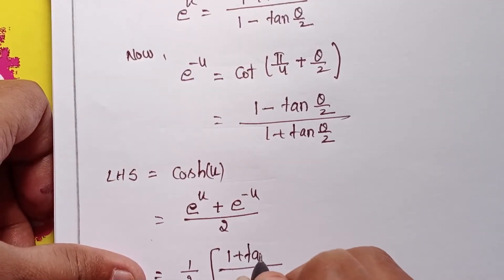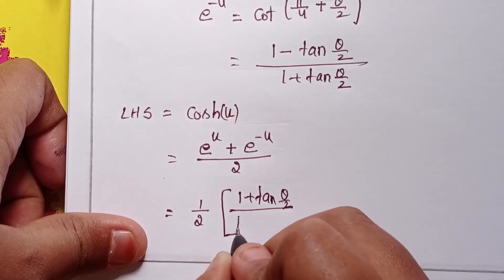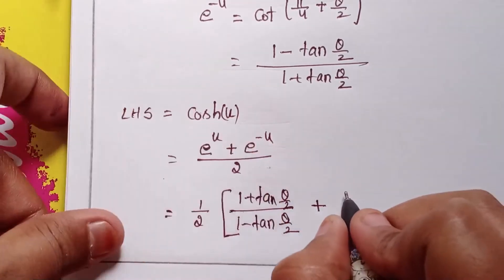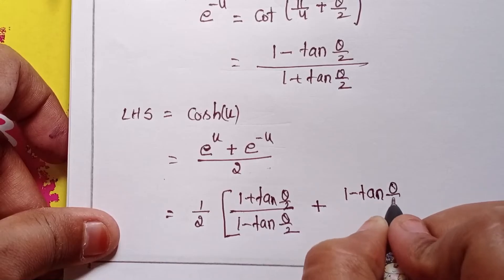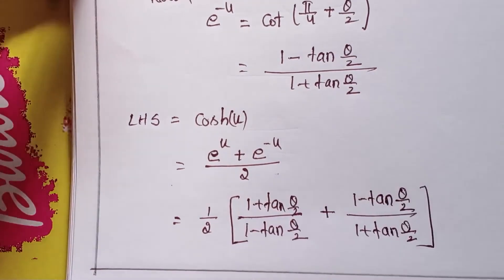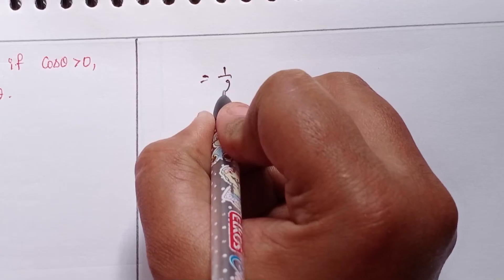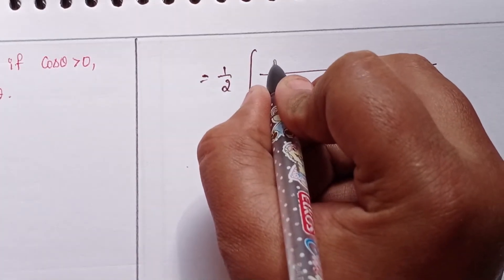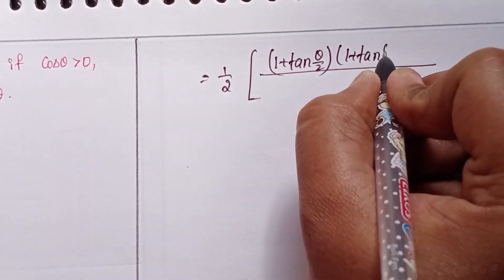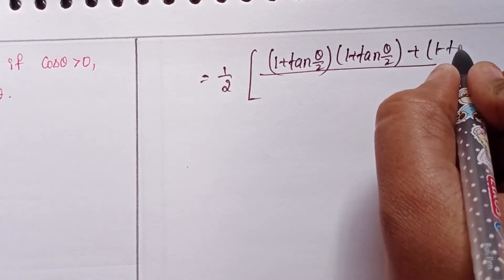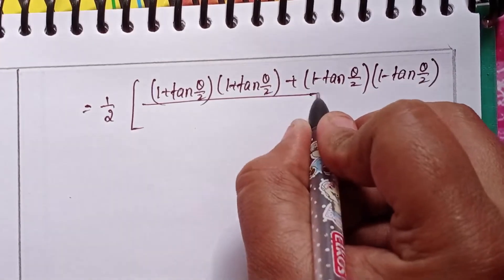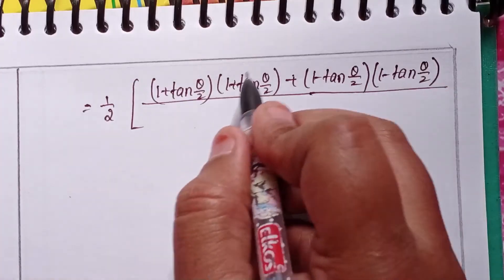Substituting: e^u = (1 + tan(θ/2)) / (1 − tan(θ/2)), and e^(−u) = (1 − tan(θ/2)) / (1 + tan(θ/2)). After cross multiplication, we get (1/2) times [(1 + tan(θ/2))² + (1 − tan(θ/2))²], which can also be written with the whole squares.